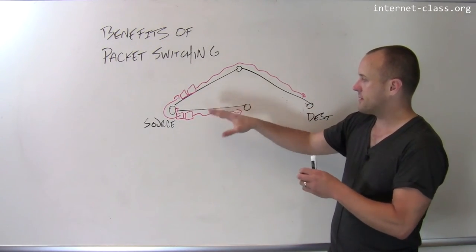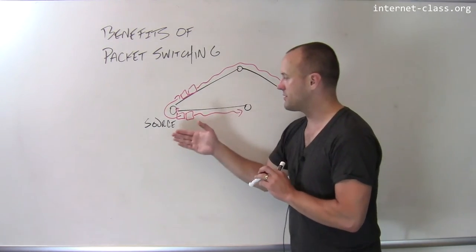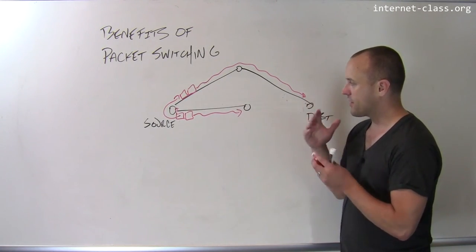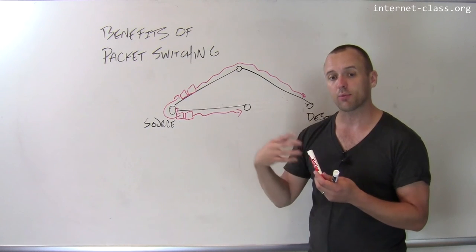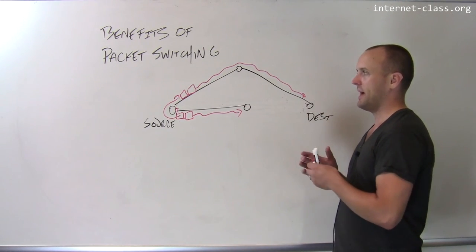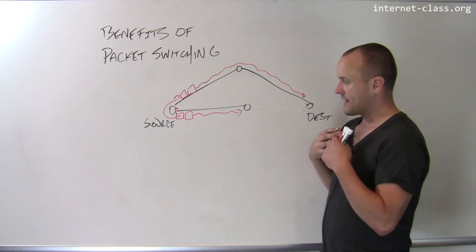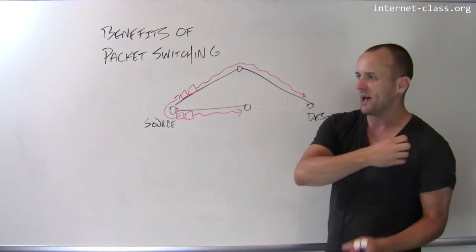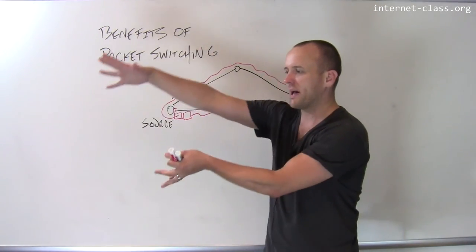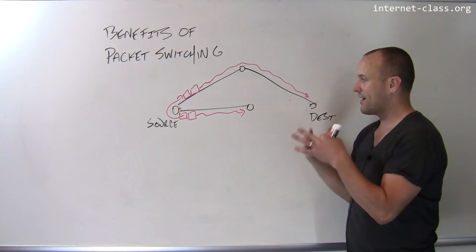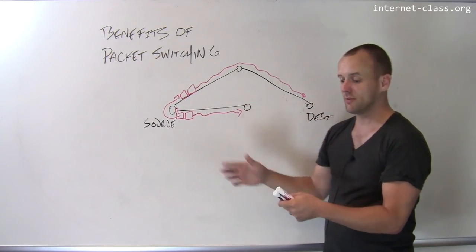And so the way that packets can do this as opposed to circuits is one of the hallmarks of the survivability and the reliability that go along with the packet switch system. So when I transmit data using packets, you can think of it as I'm throwing those packets out into the network, and they are allowed to find their own route to the destination.